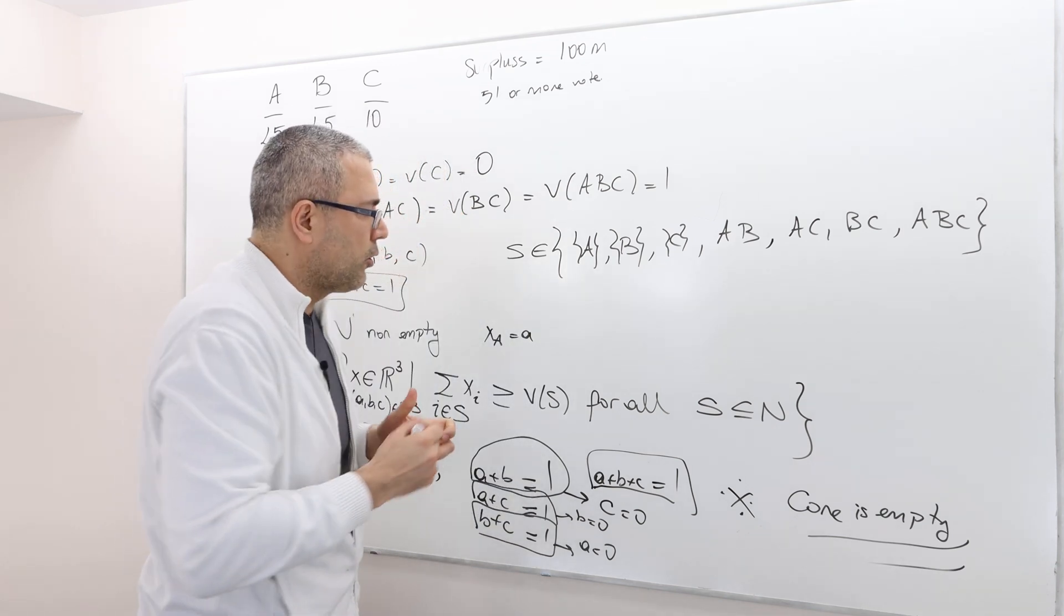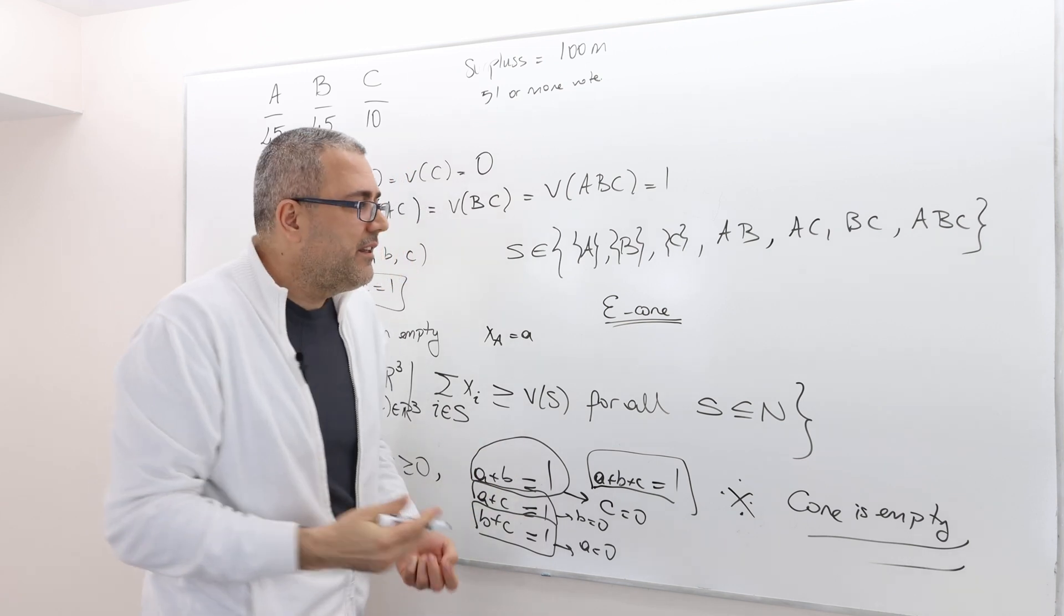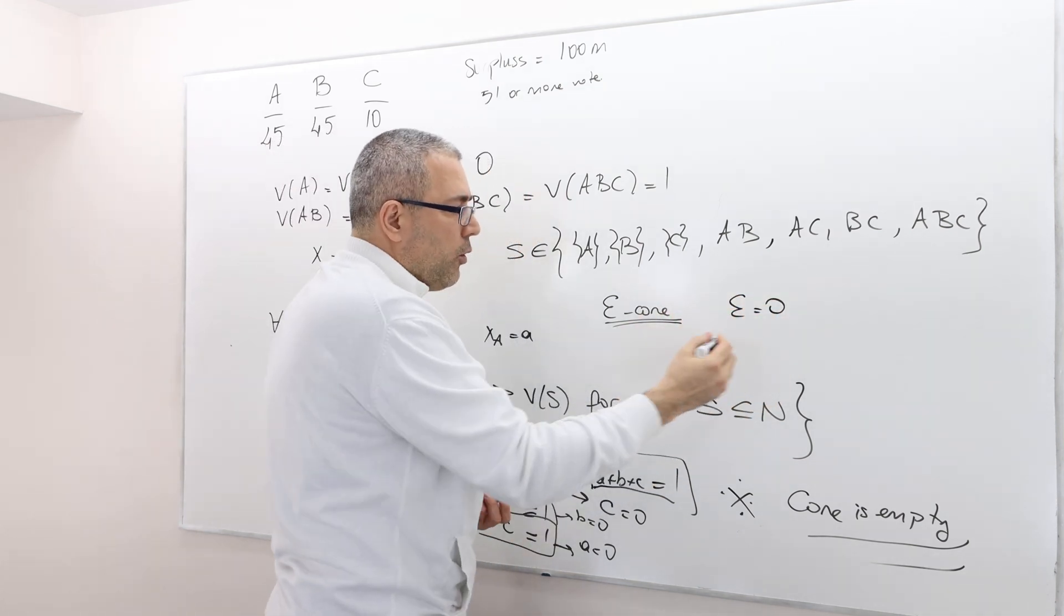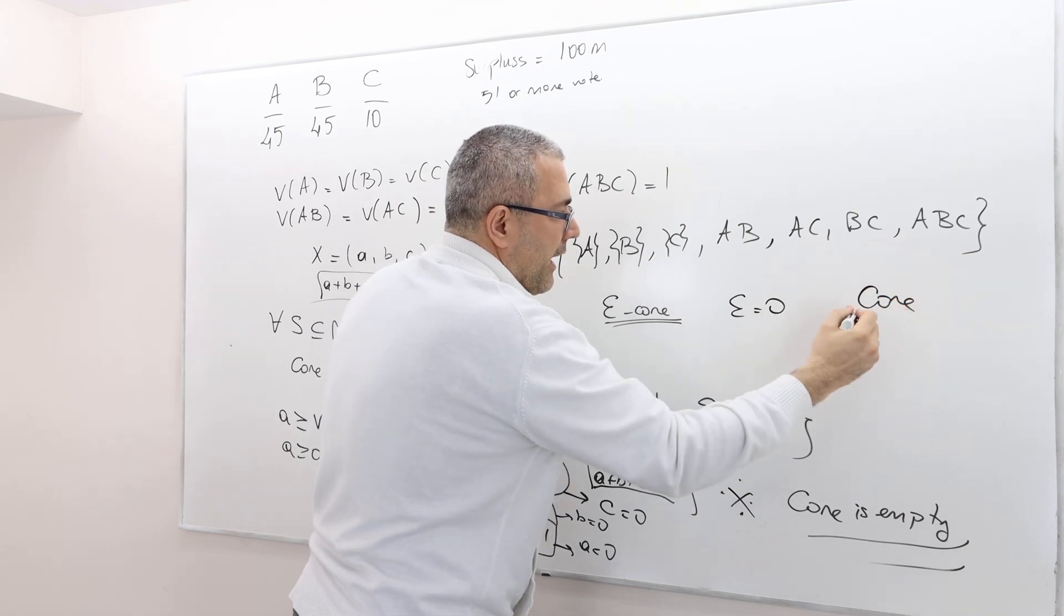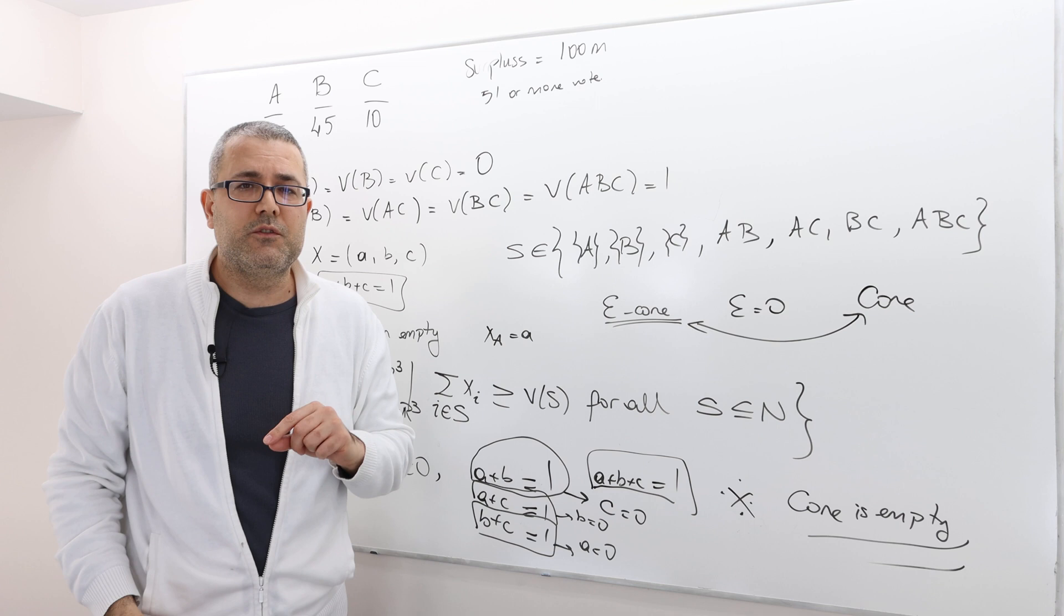We defined epsilon core, remember? Epsilon core. So why? Well, the thing is, if epsilon is equal to 0, then epsilon core and core are actually identical things, right? If epsilon is equal to 0.